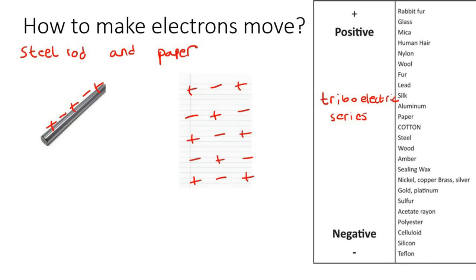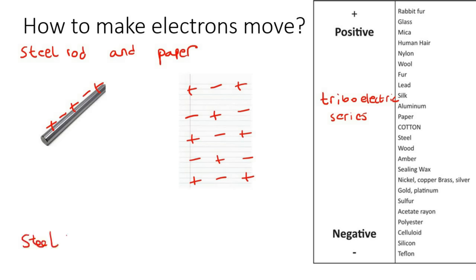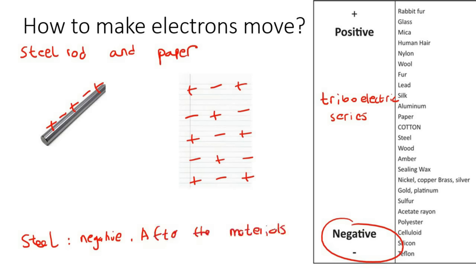On this table, we can see that steel is more negative. That means that after the materials have been rubbed together, steel will be more negative.